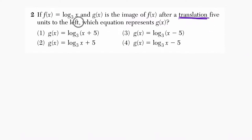So let's see what we have here. We have f(x) which equals log base 3 of x, and then g(x) is the image of f(x) after a translation of 5 units to the left. We're told it's going to the left. That's what g(x) is.